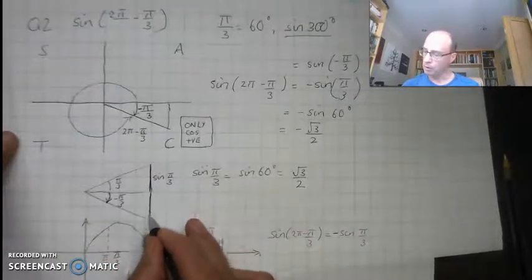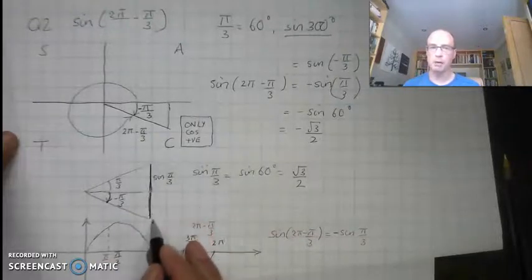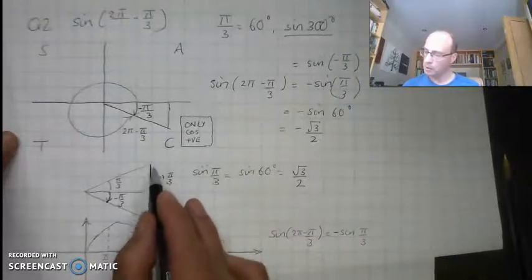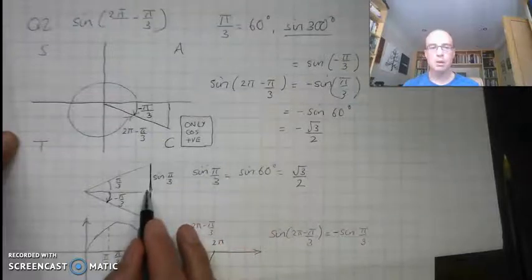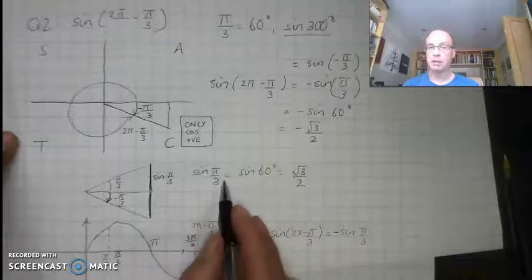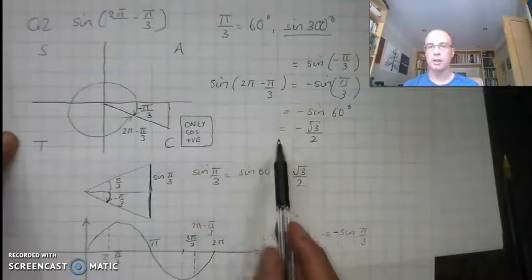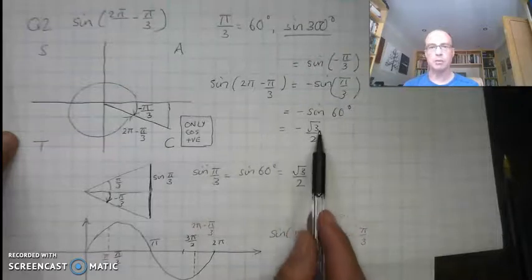So we're looking for the height, but this time it's going to be negative. If I'm going up, I'm going down. So it's going to have the same magnitude, √3/2, but I'm going to have a negative value. So sine of 2π minus π/3 is going to be that negative √3/2.